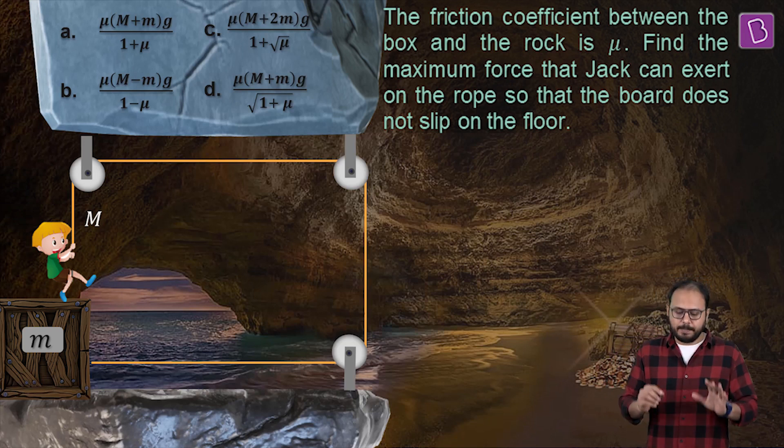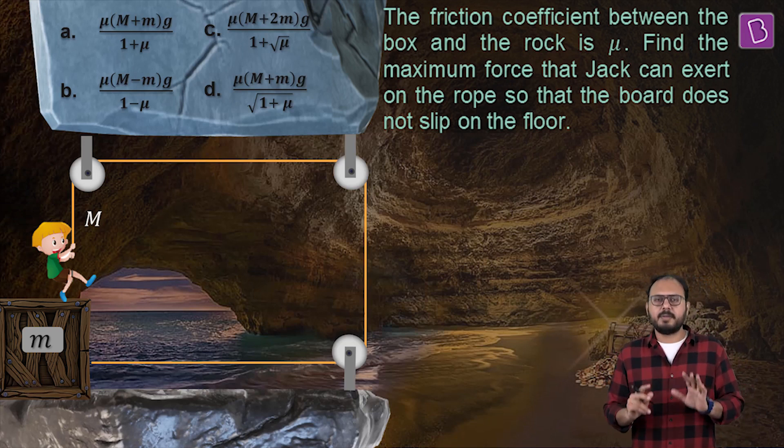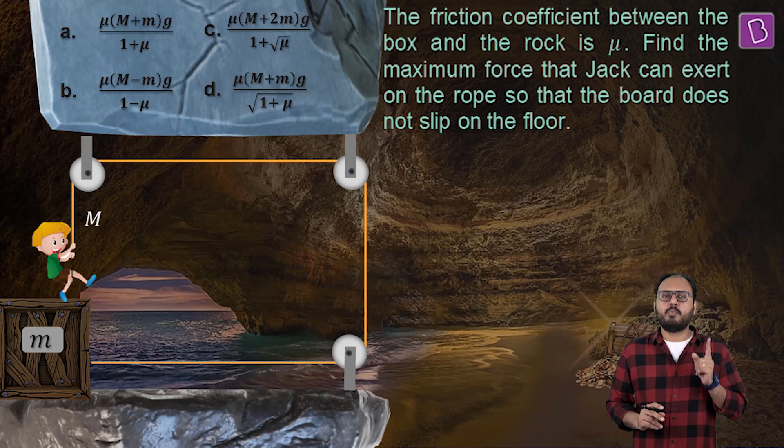In other words, what should be - equilibrium should be there, point number one. And what is the maximum force that Jack can pull the rope with that the equilibrium still maintains? I'll give you time to solve this question.